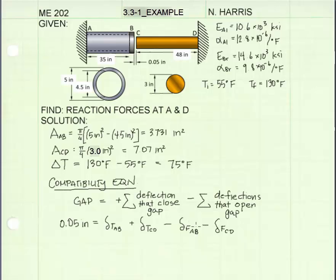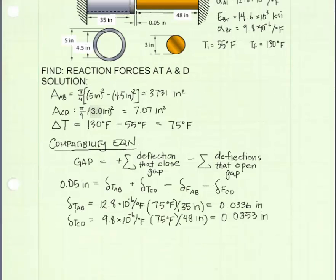Now I've calculated the thermal deflections for members AB and CD. Thermal deflection is equal to alpha delta T times the original length. Alpha for the aluminum is here. The change in temperature, delta T, is 75 degrees, calculated above. The original length is 35 inches. And I can calculate what the thermal deflections are.